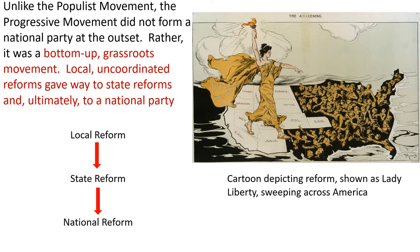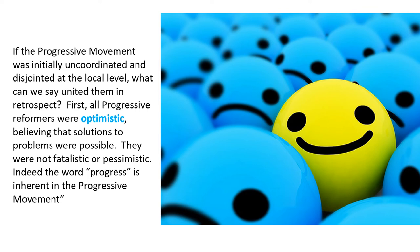A cartoon on the right depicts reform with Lady Liberty sweeping across America. So if the Progressive Movement was initially uncoordinated at the local and then state level, what united them in retrospect? All progressive reformers were optimistic — they believed solutions to problems were possible. They weren't fatalistic or pessimistic. Indeed, the word 'progress' is inherent in the Progressive Movement.